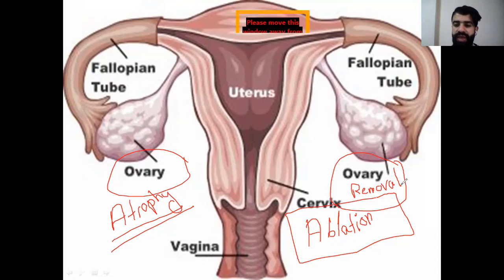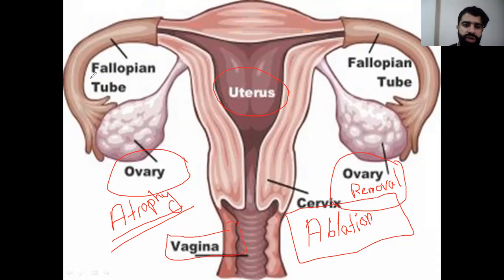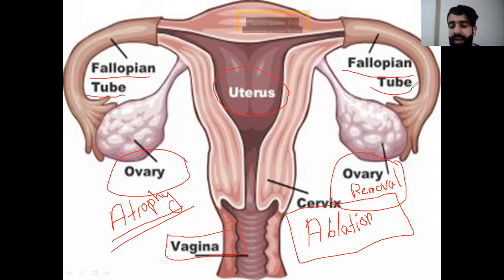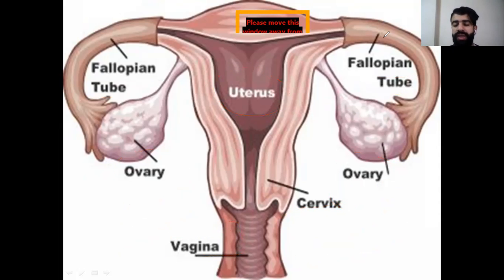The endocrine gland basically secretes chemical substances — hormones — into the blood. Here we have the uterus, which is the site of implantation of the embryo; the vagina, which is the female sexual organ; and the fallopian tubes, also called the uterine tubes. This is everything related to the revision for the endocrine system. Thank you.